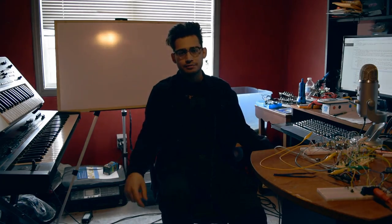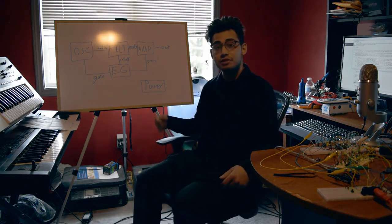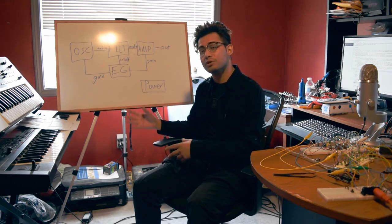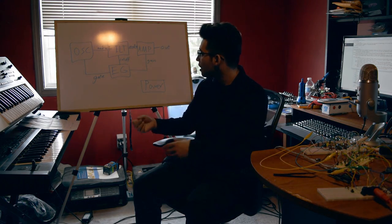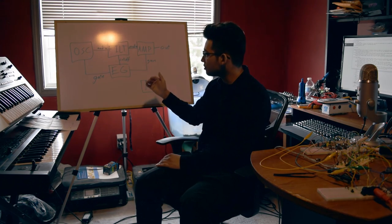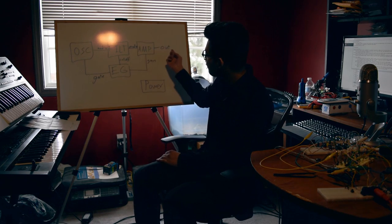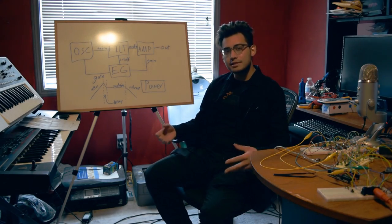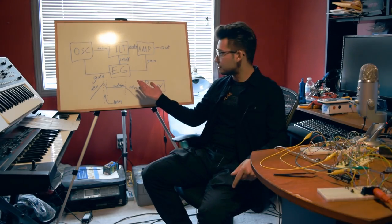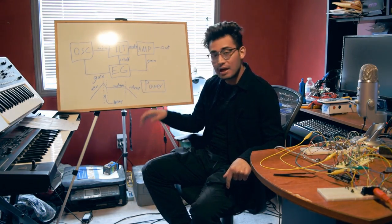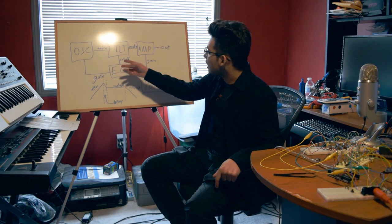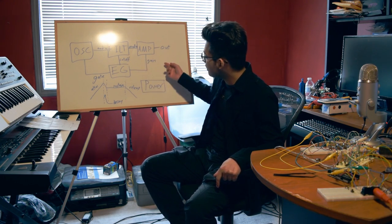Let's go back and redraw our block diagram to refresh ourselves on what we're trying to do. First, our audio path: we start with our oscillator section outputting raw waveforms, that audio goes to our filter section which removes some harmonics, then the audio coming out of the filter goes into the amp which modulates the volume of the signal, and finally that goes to our headphones or audio interface. What really makes the synth interesting is the envelope generator section, which takes in a gate signal — that LED that turns on when we press a key and off when we let go — and it modulates the cutoff of our filter and the gain of our amplifier.